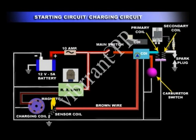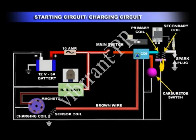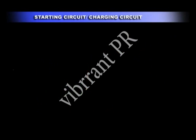The charging coil, sensor coil, rectifier come regulator unit, battery, CDI unit, high tension coil, spark plug, and carburetor switch are grounded by body or wire.